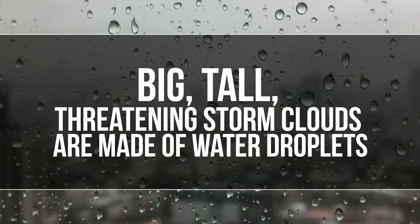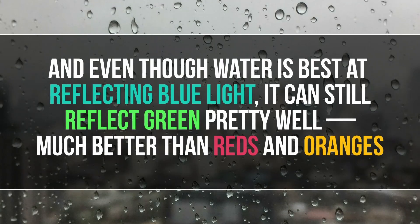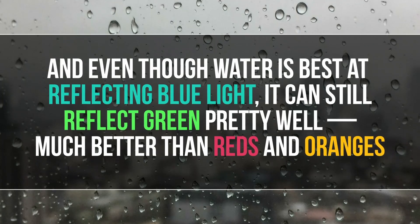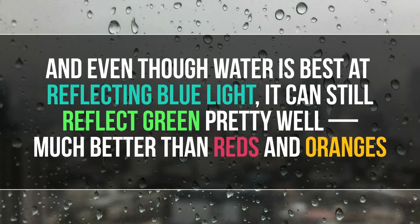But for us to notice the residual green light, it needs to hit something that reflects green light much better than red. And that's where water comes in. Big, tall, threatening storm clouds are made of water droplets. And even though water is best at reflecting blue light, it can still reflect green pretty well, much better than reds and oranges.